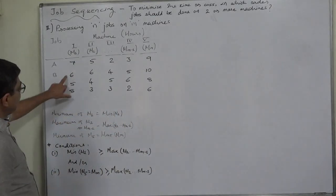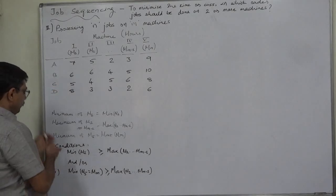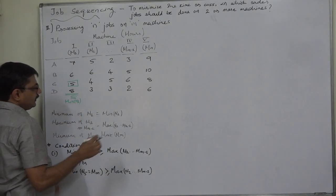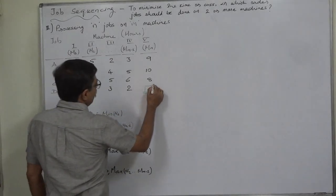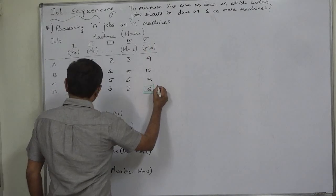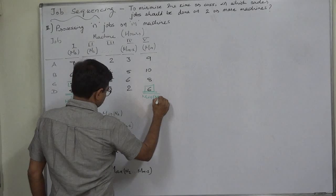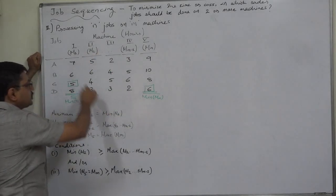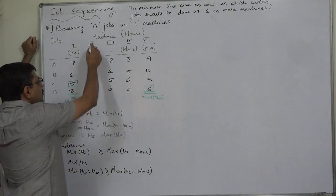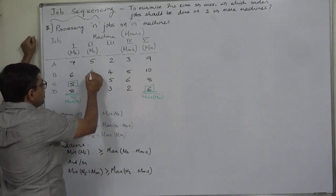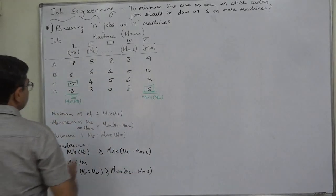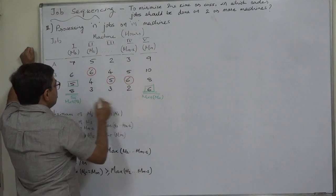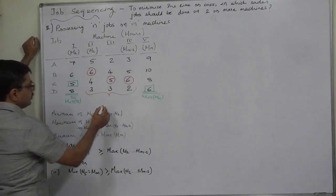First, select the minimum time on machine one — it is five. Similarly, select the minimum time on the last machine (the Mth machine). Then select the maximum time across all other machines except the first and last: on machine two the highest is six, on machine three the highest is five, and on machine four the highest is six. The maximum among all three is six.